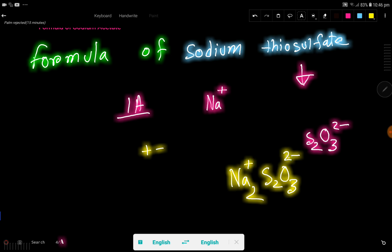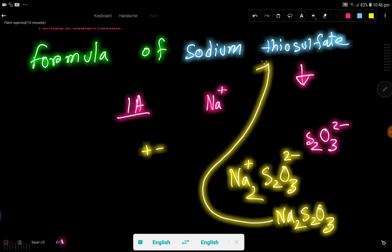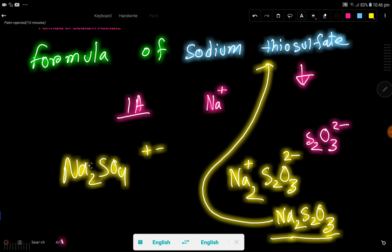So basically we are getting this formula: Na2S2O3. This is the formula of sodium thiosulfate. Look, this is the formula of sodium sulfate. If you take two sulfur, then we are getting thiosulfate. I hope you have understood this thing. So be well.